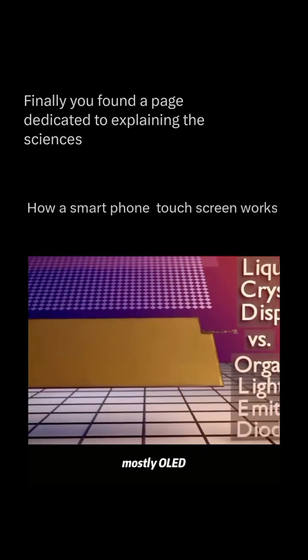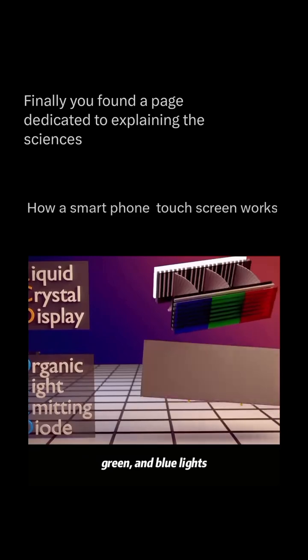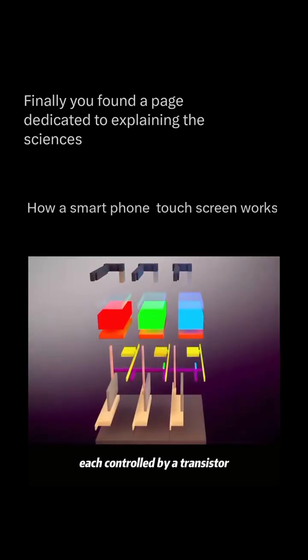The bottom layer is the display, mostly OLED. It's made of tens of millions of tiny red, green, and blue lights, each controlled by a transistor.